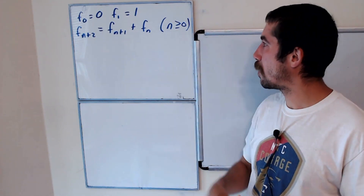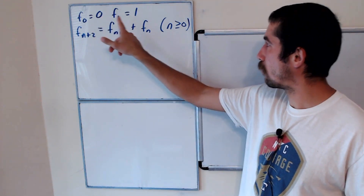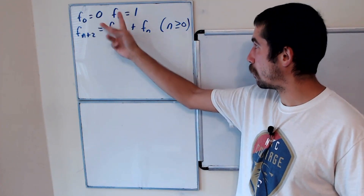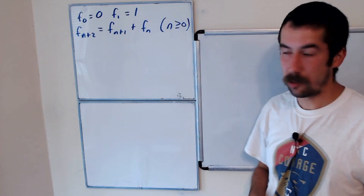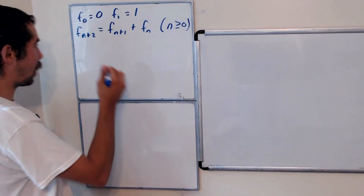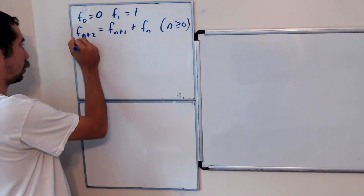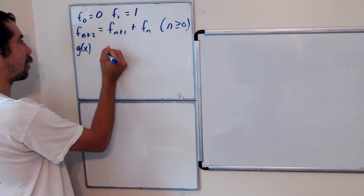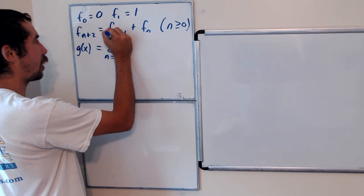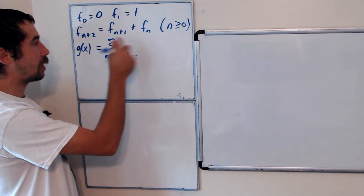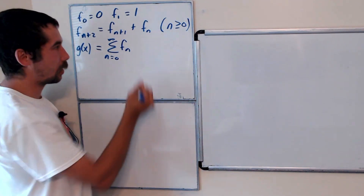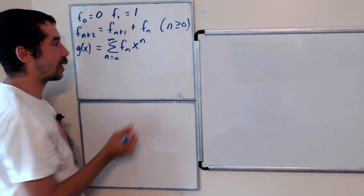Just as a reminder, what's the Fibonacci sequence? The 0th term is 0, the first term is 1, and then to get the next term you just add the sum of the previous terms. So let's call our generating function g of x. It's a power series that sums from n equals 0 to infinity, and it has the nth Fibonacci number times x to the n.